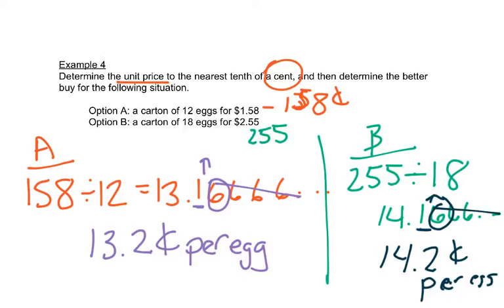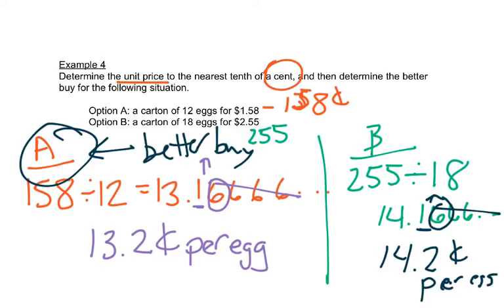So the answer is the first part of the question says determine the unit price to the nearest tenth of a cent. And then it says, then determine the better buy. So the better buy would be the cheapest price. 13.2 cents or 14.2 cents? Well, 13.2 cents is cheaper, so option A is the better buy. And that will help you do the homework for this section.